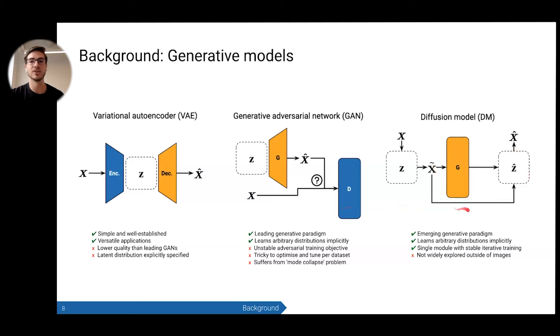Diffusion models are an emerging paradigm. We've seen them explode over the past few years. This is now a single neural network, so it's a much more stable iterative learning process. It's based on the idea of adding and removing noise. Like GANs, diffusion models learn arbitrary distributions implicitly, but they haven't really been explored all that much outside of images.